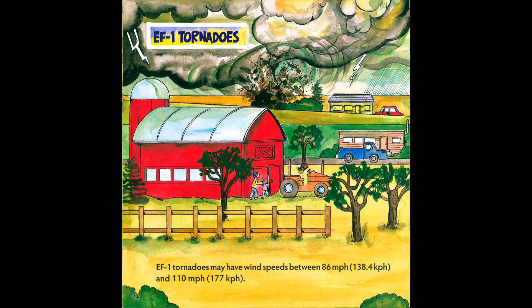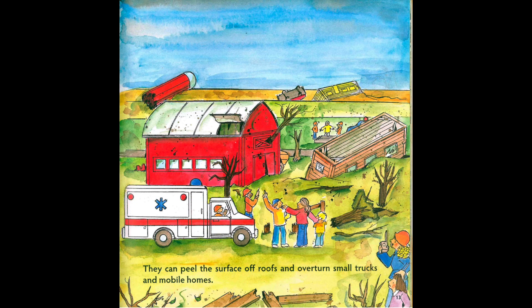EF1 Tornadoes may have wind speeds between 86 miles per hour (138.4 kilometers per hour) and 110 miles per hour (177 kilometers per hour). They can peel the surface off roofs and overturn small trucks and mobile homes.